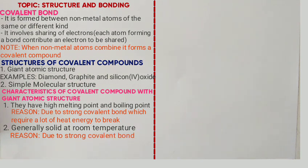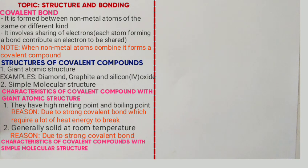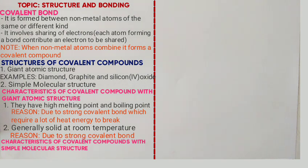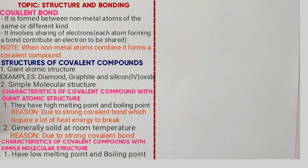Compounds with simple molecular structure have the following characteristics. They generally have low melting and boiling points — due to weak intermolecular forces of attraction, which require less heat energy to break. Number two, they are generally liquid or gas at room temperature, again due to weak intermolecular forces of attraction.